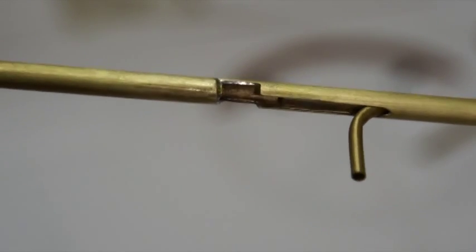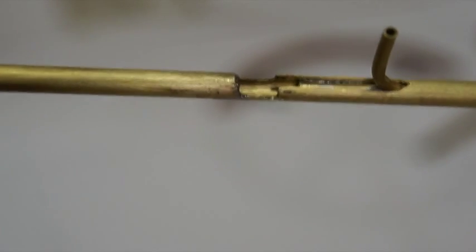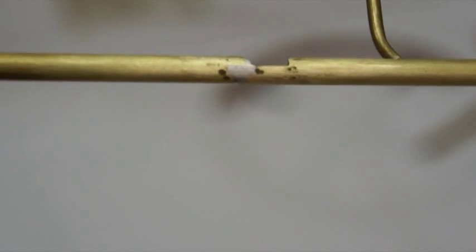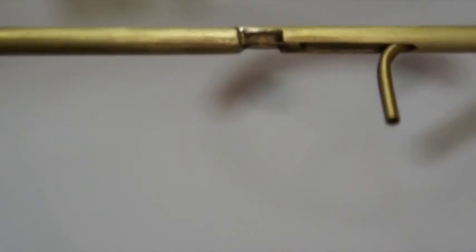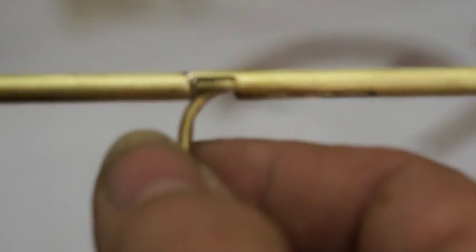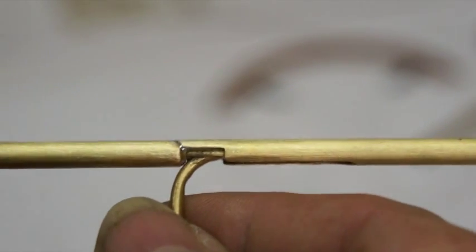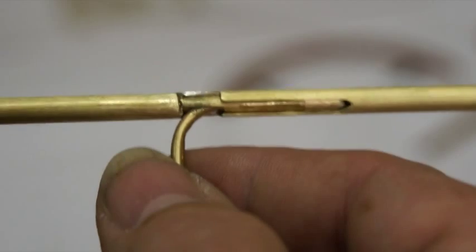After a little bit of cleanup, we can check to make sure everything is the way it's supposed to be. Here it's easy to see that with the pivot piece moved off to the side, it was in no danger of being fused when we soldered those two tubes together. But now we can move it back where it belongs, check to make sure things are pivoting, and move on to do the exact same thing on the other side.